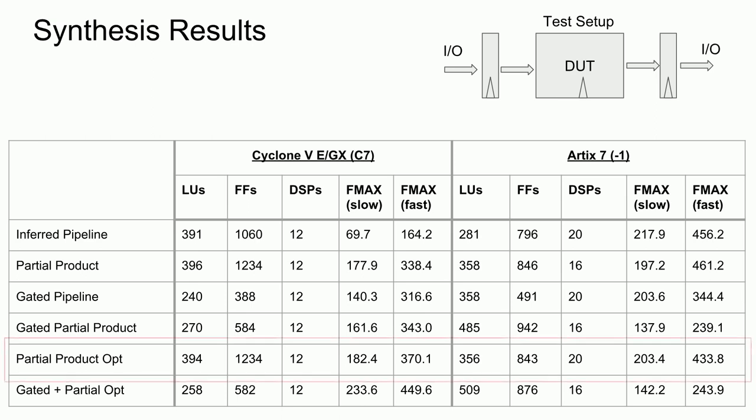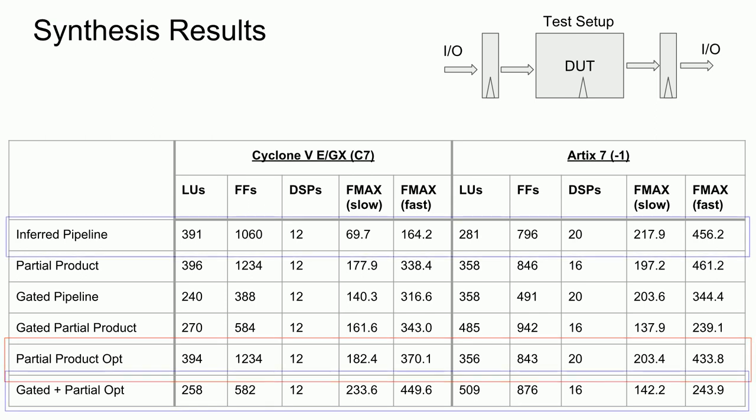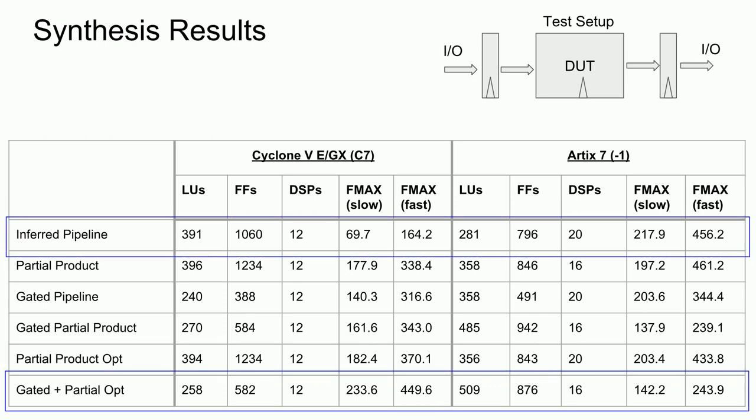If I were to choose an implementation to use for both target devices, I would go with the partial product optimization. However, if we decide to instead alter the architecture depending on the target device, which is different from instantiating device-specific IPs, since both versions will compile and synthesize on both platforms, then I would choose the gated plus partial opt for the Cyclone 5 and the original inferred pipeline for the Arctic 7. Most likely, the reason for the initial implementations being so slow on the Cyclone 5e was due to the 64-bit multipliers being large and having huge propagation delays. We can see that the speeds effectively doubled when we moved away from the pipeline 64-bit multipliers.